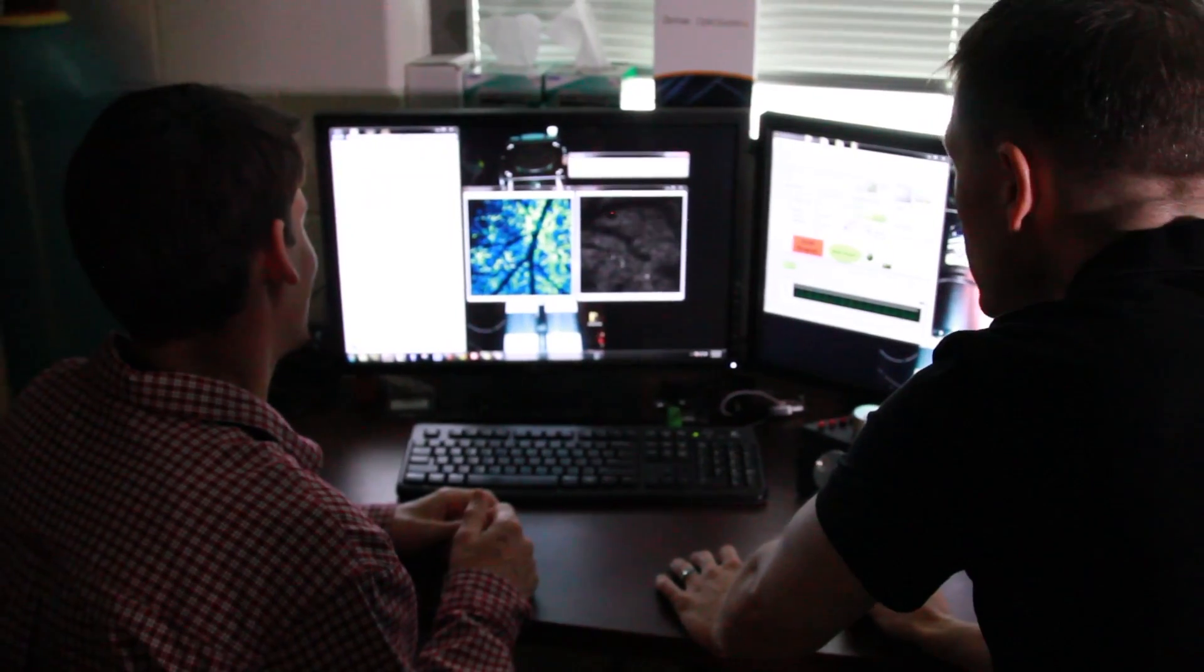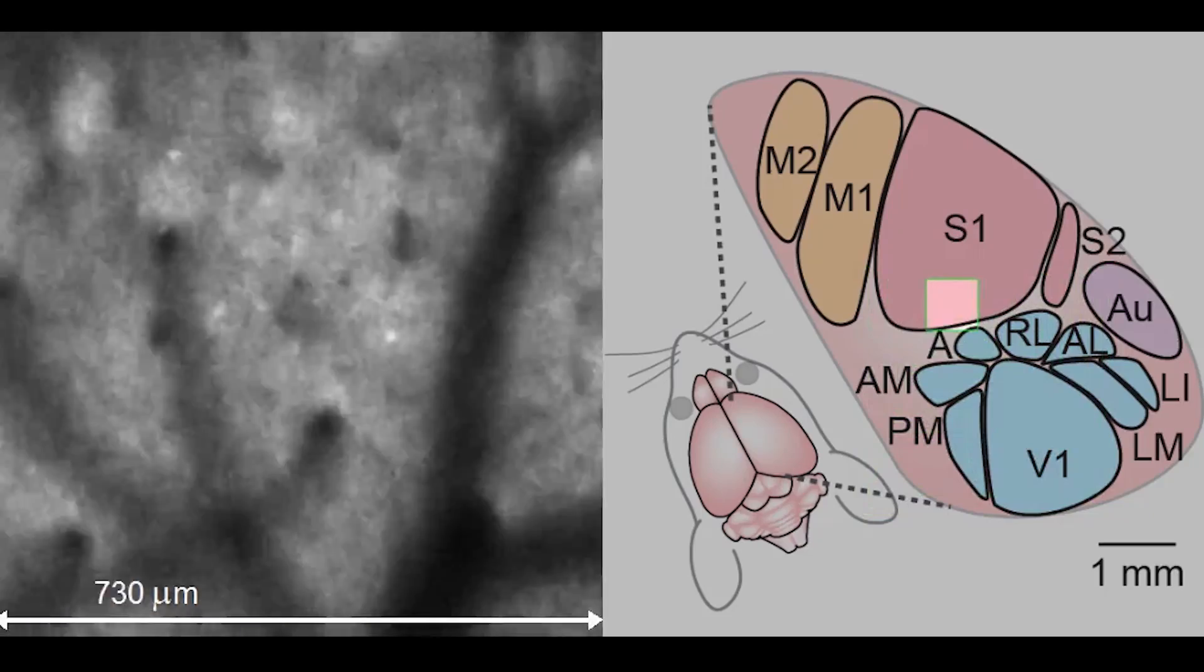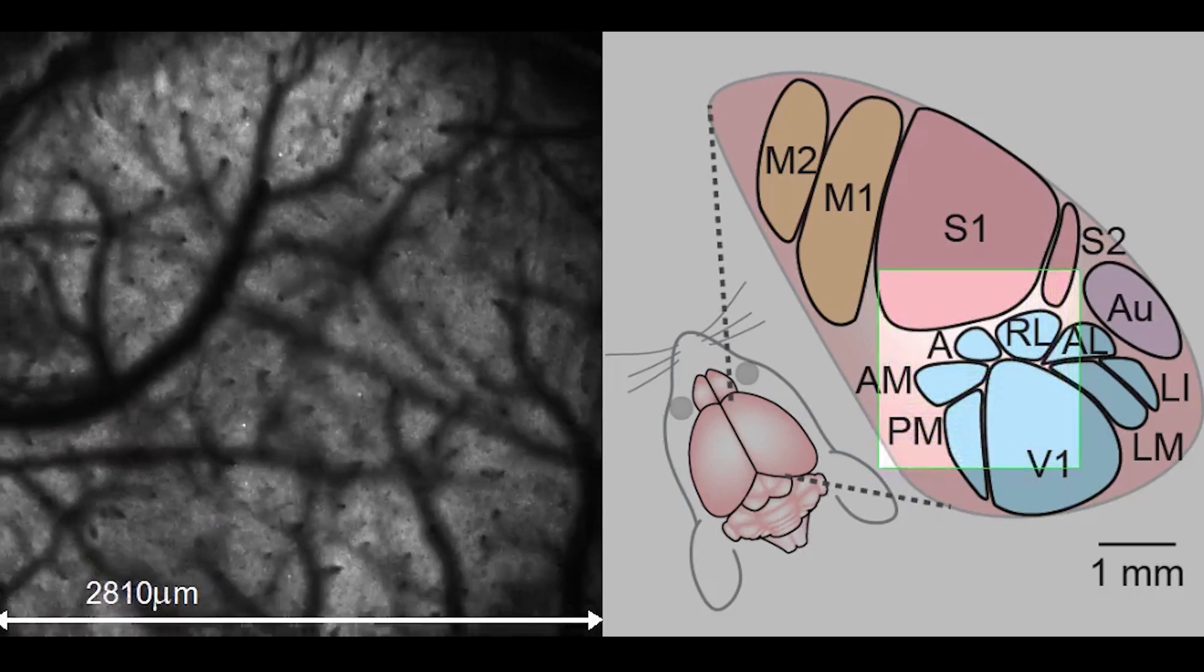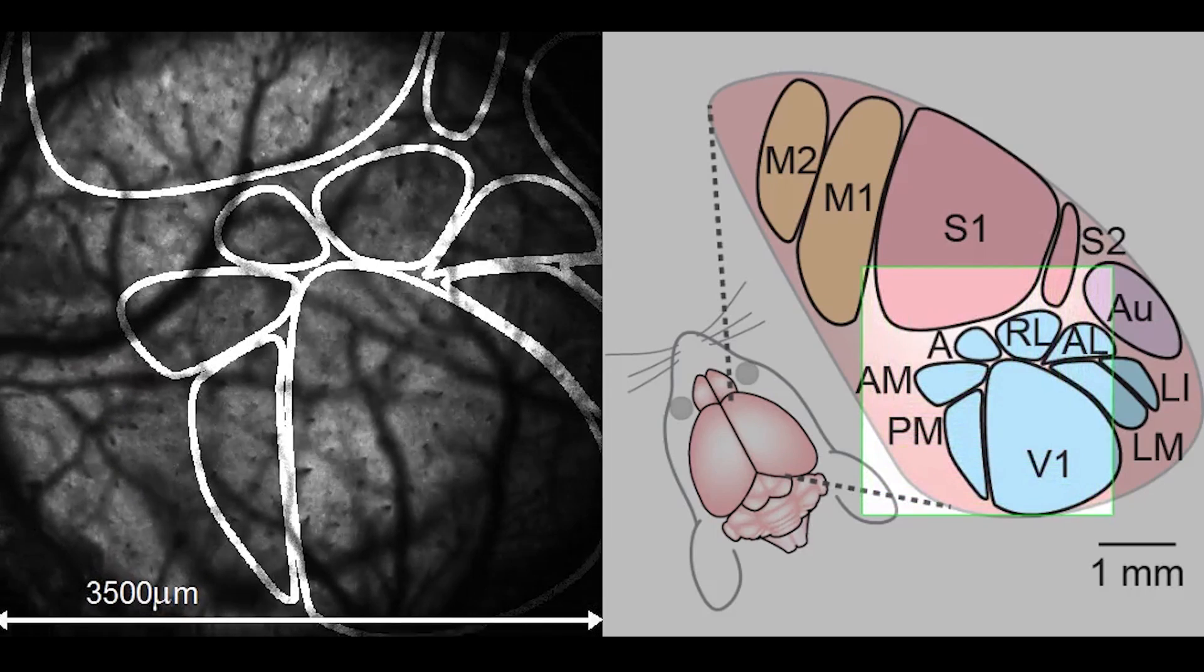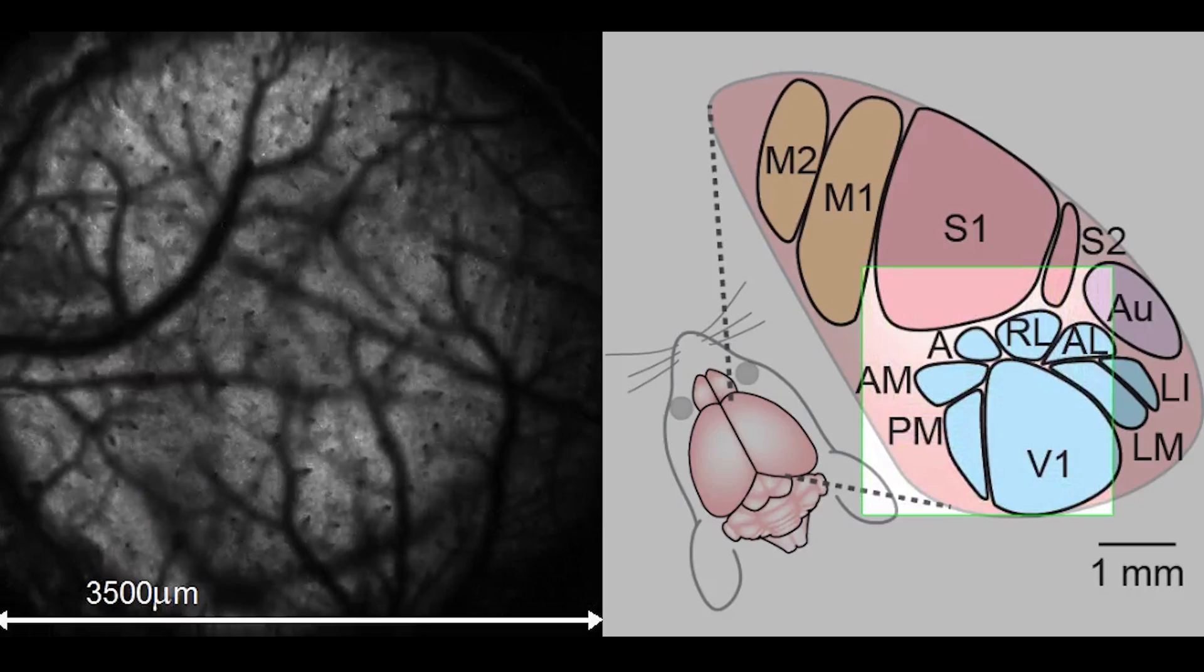You literally see the neurons light up when they are firing. And those patterns of activity are typically seen in these very small fields of view. And so it's tremendously exciting to be able to scroll out. It's like Google Maps where we can actually start to zoom out and see this satellite level view of brain activity.